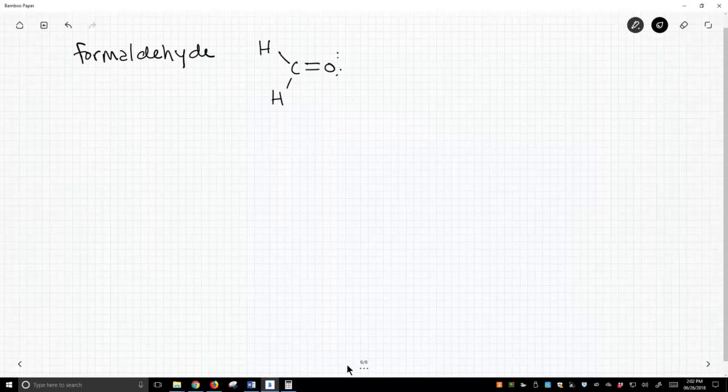What's different about formaldehyde is it contains this double bond. Formaldehyde contains multiple sigma bonds - there's a C-H sigma bond, and another C-H sigma bond. One of these two bonds between carbon and oxygen is a sigma, and the other is a pi bond. That's the Greek letter pi, and that's what I want to focus on.